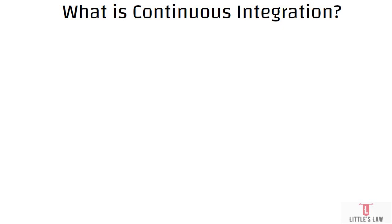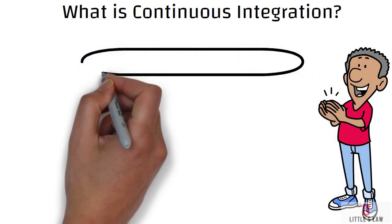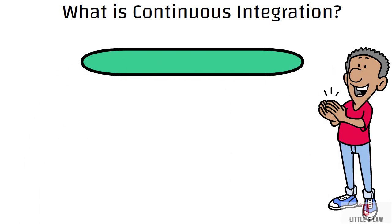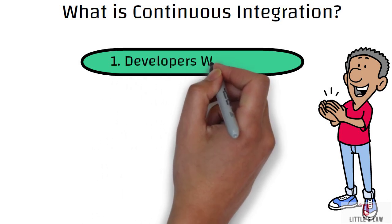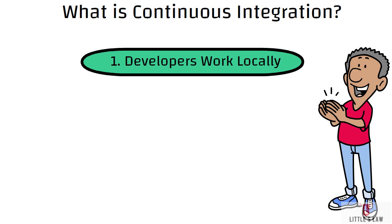The first step here is: developers work locally. So developers work on their code locally on their development machines, which are their own personal machines. They make changes and improvements to the codebase as needed — to implement new features, any fixes, any bugs, or to enhance existing functionality. That's the very first step.